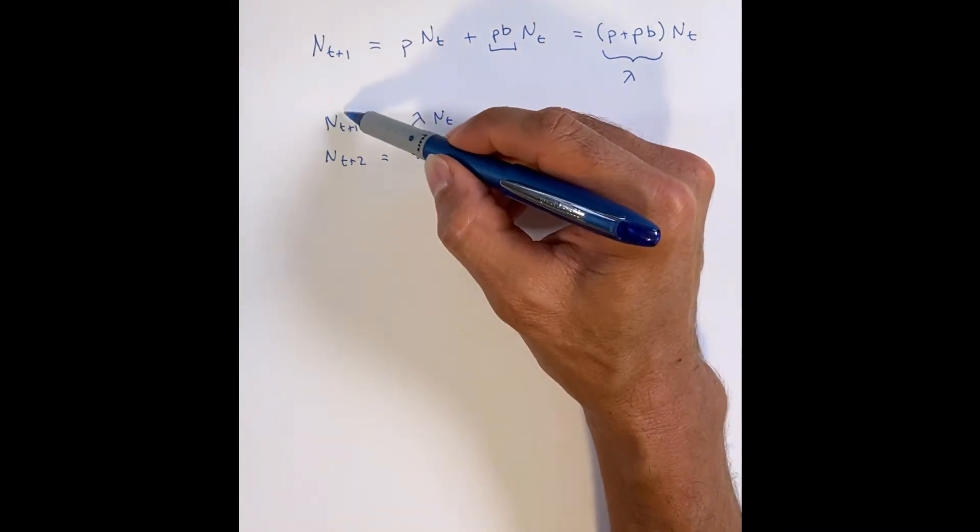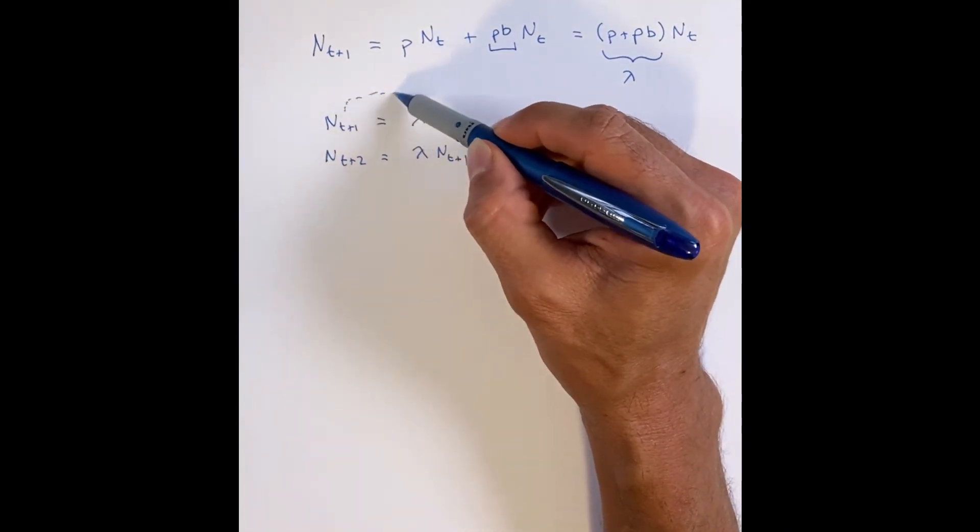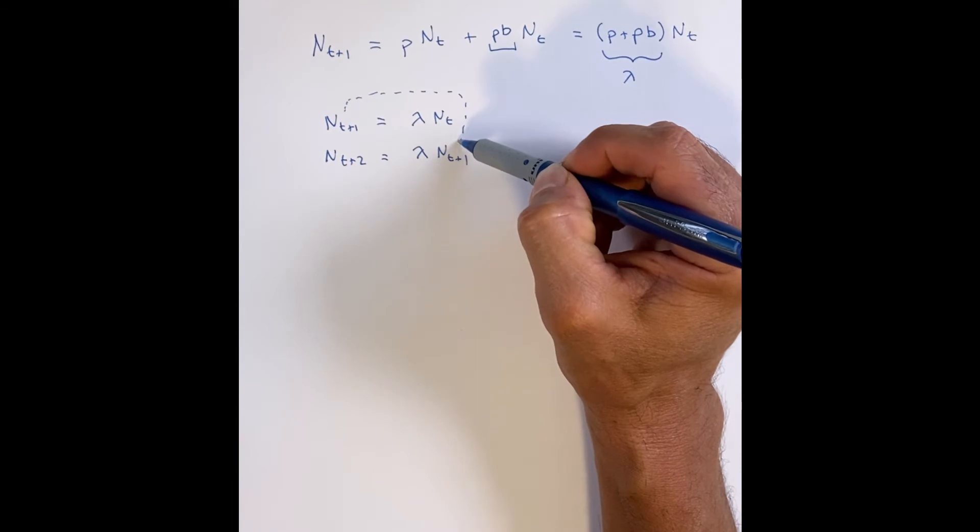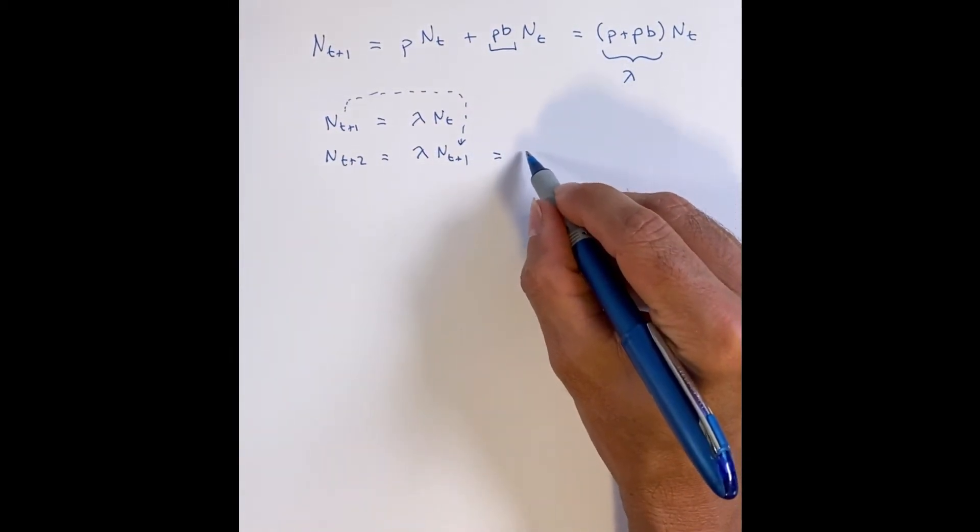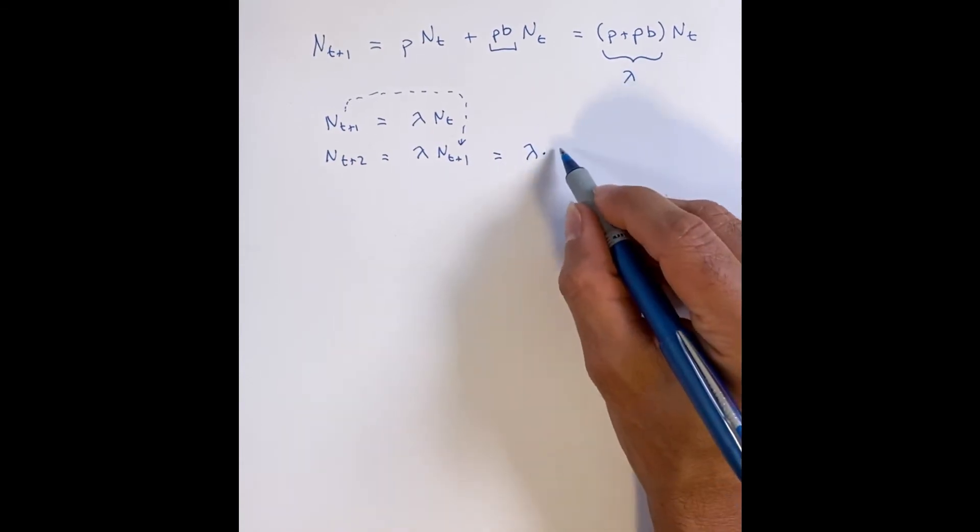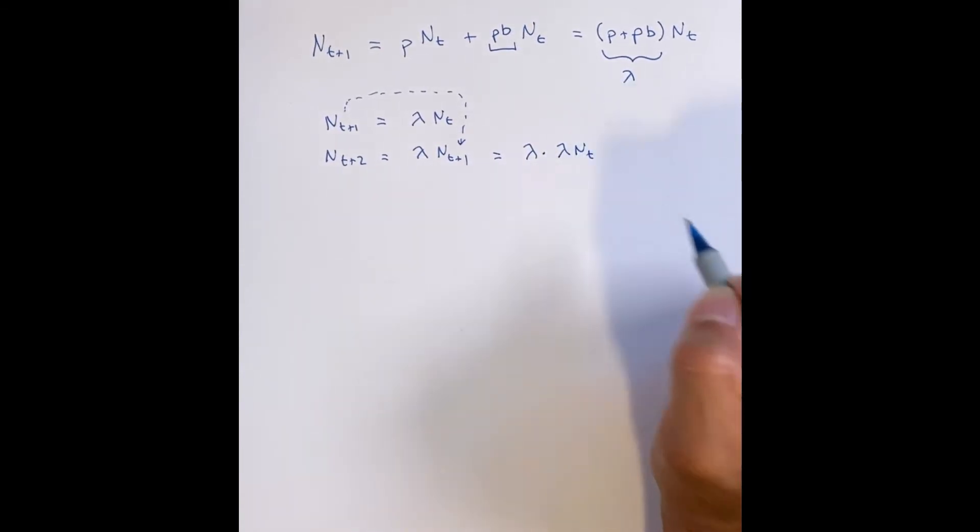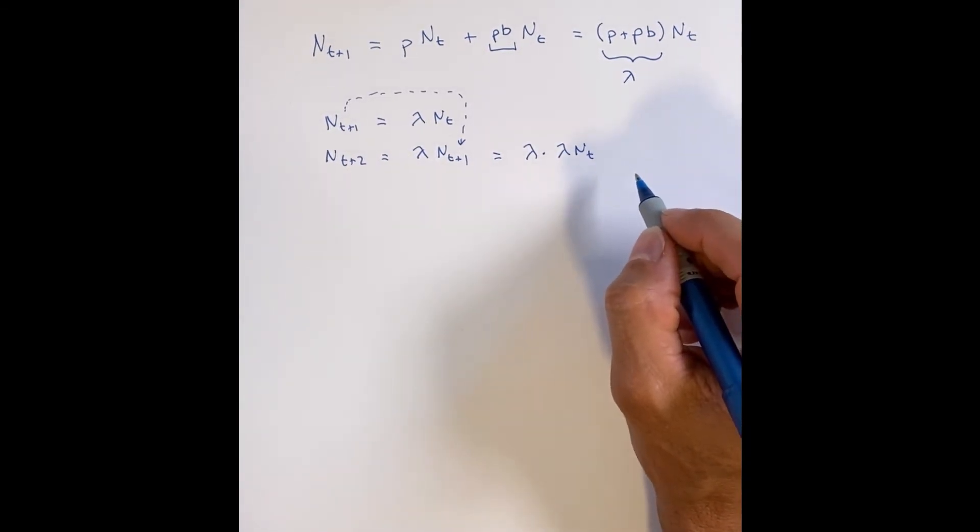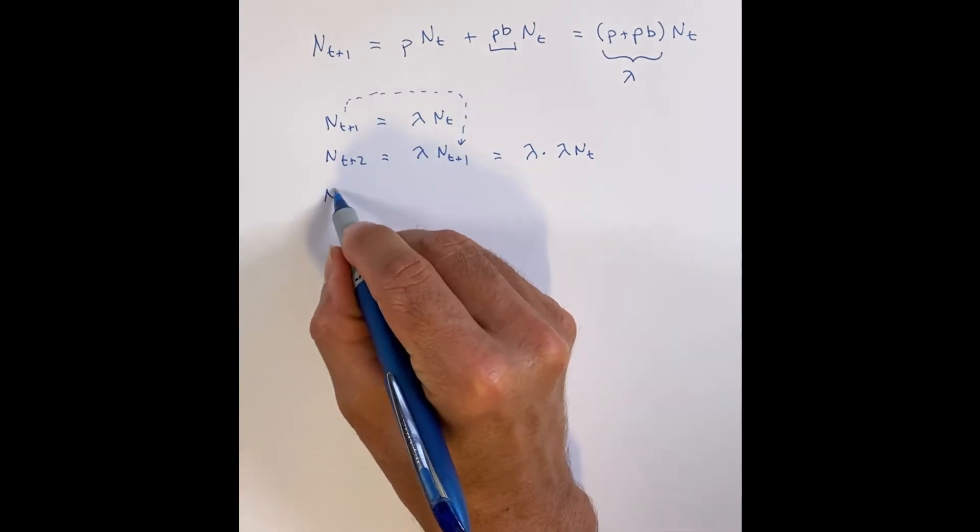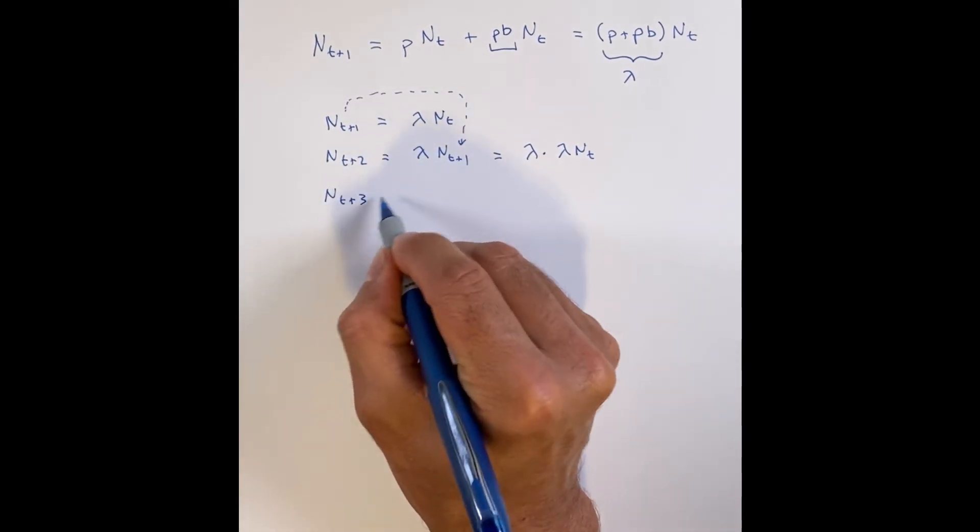Now, you should immediately notice that N of t plus one, you know what that is. That is lambda times N at t. So if you just substitute N of t plus one with what you had just before, lambda times t, you take those two lambdas, multiply them together, lambda squared times N at t, and this is how many you have at time t plus two.